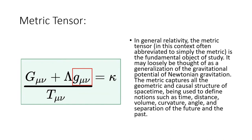Metric tensor. In general relativity, the metric tensor, in this context often abbreviated to simply the metric, is the fundamental object of study. It may loosely be thought of as a generalization of the gravitational potential of Newtonian gravitation. The metric captures all the geometric and causal structure of space-time, being used to define notions such as time, distance, volume, curvature, angle, and separation of the future and the past.